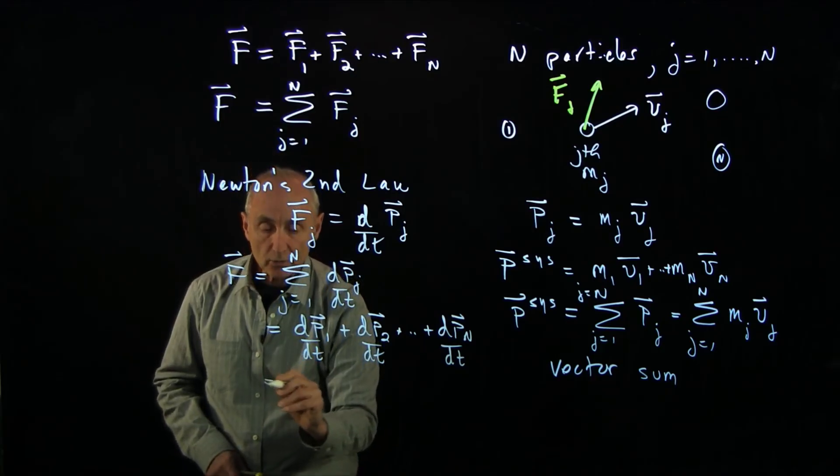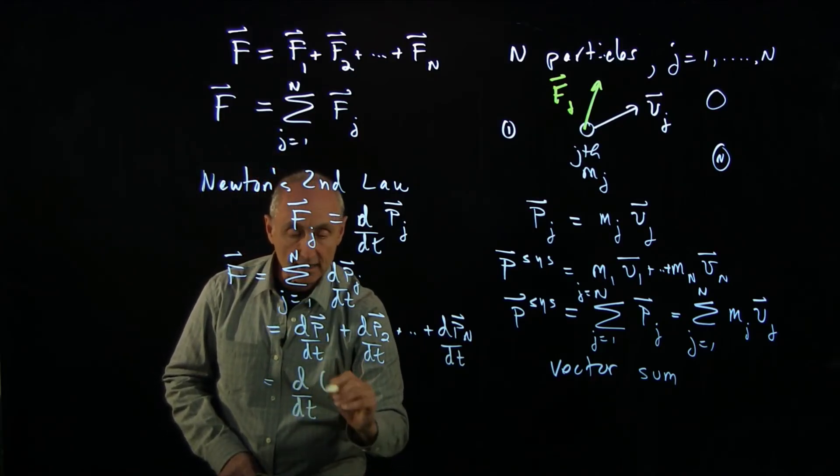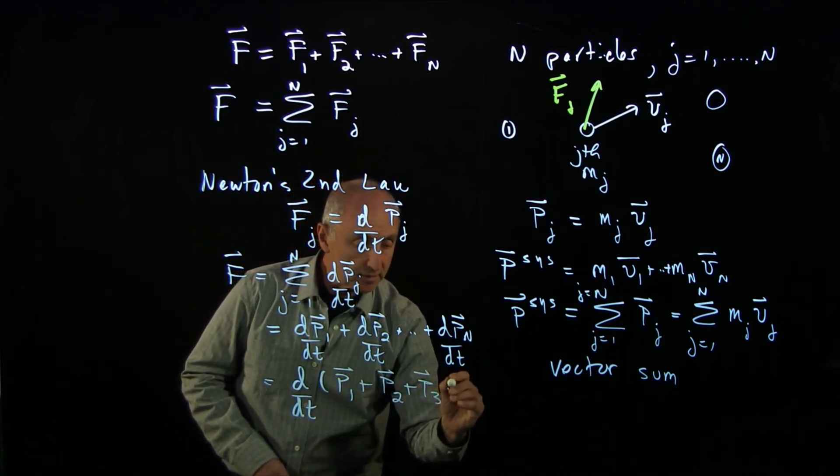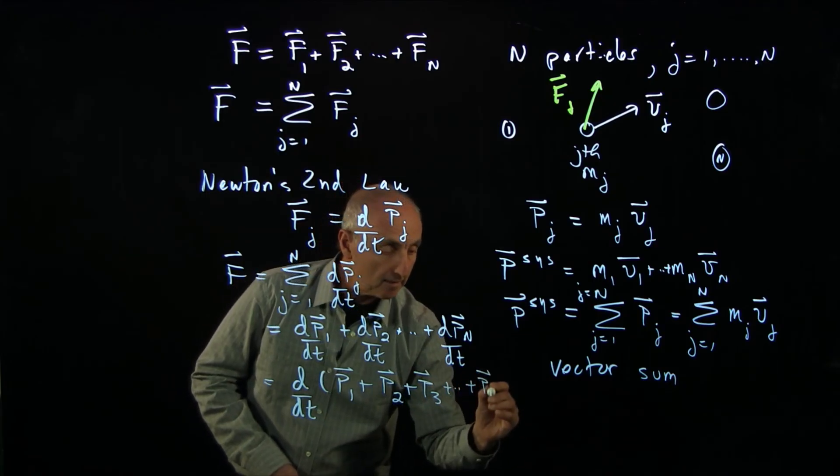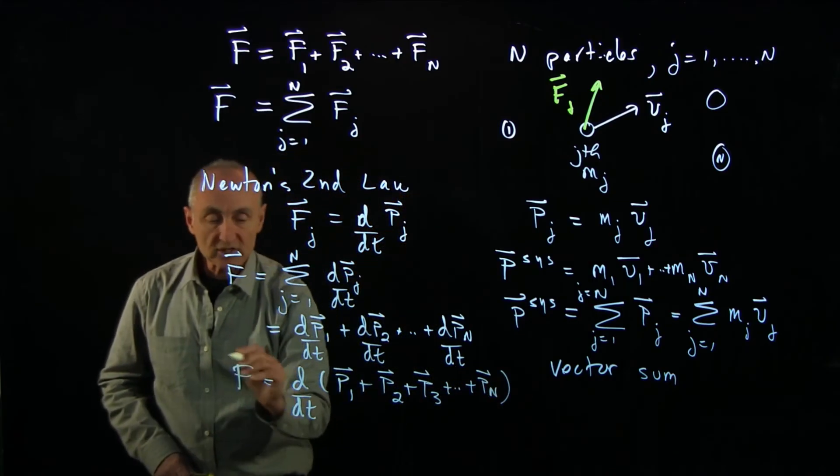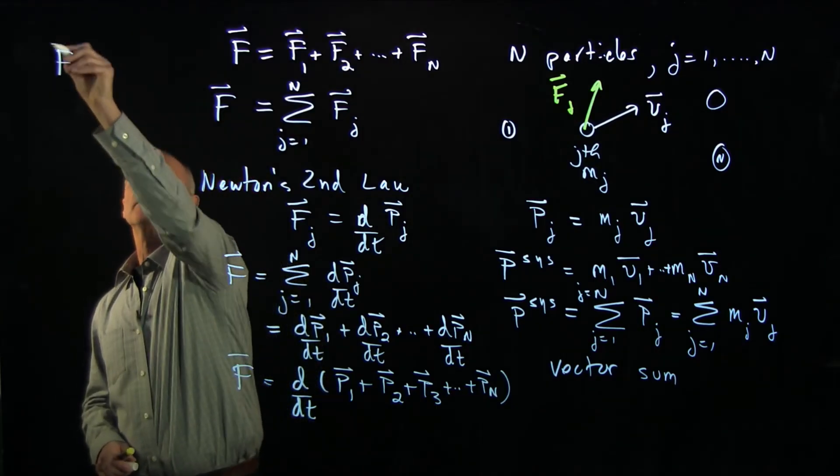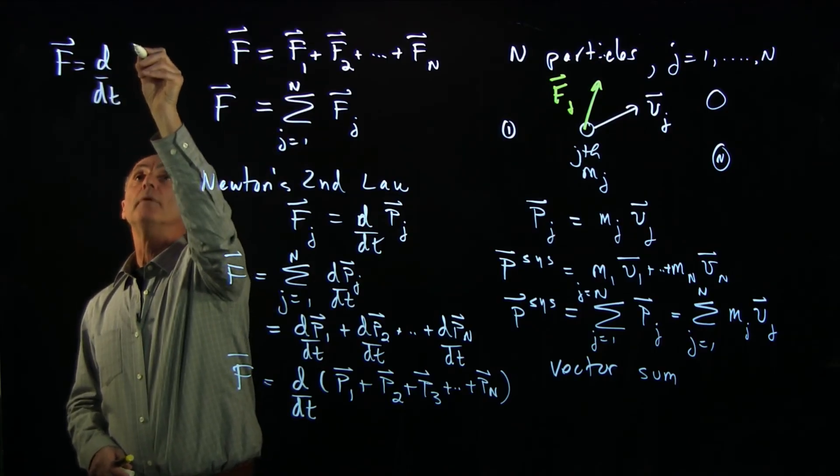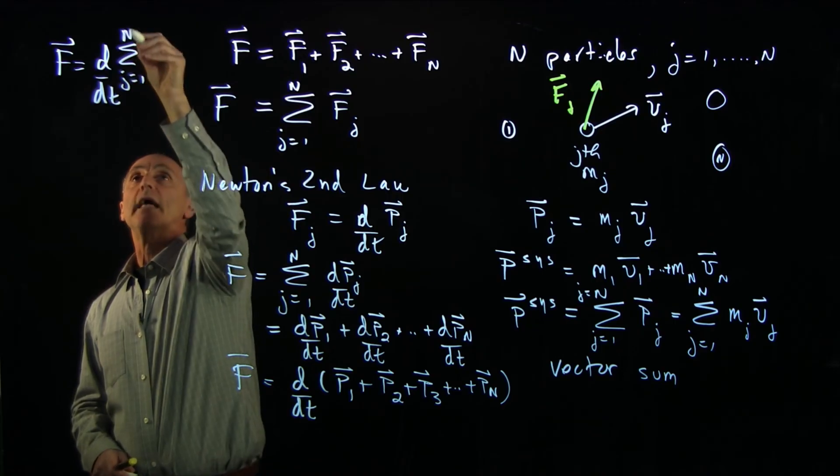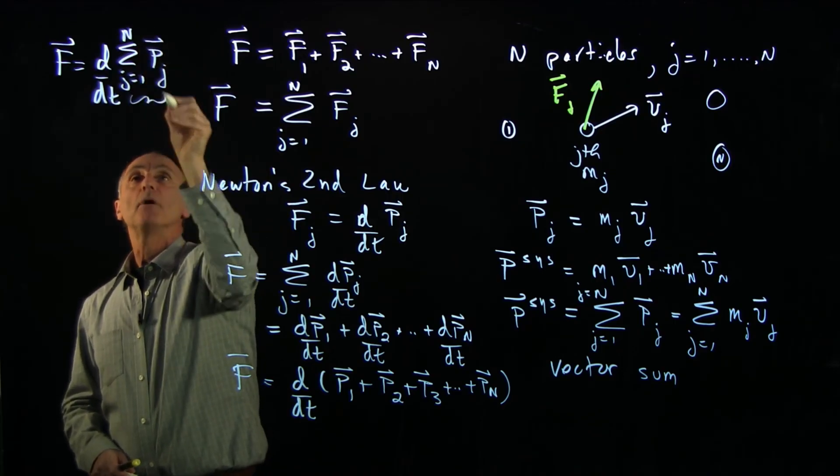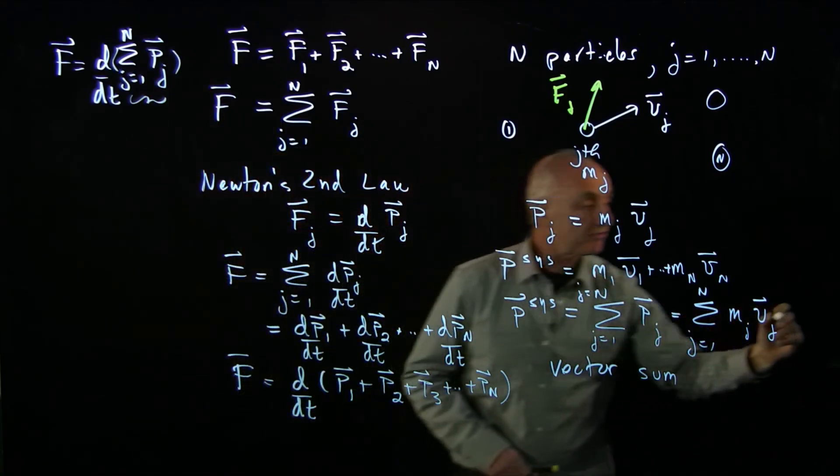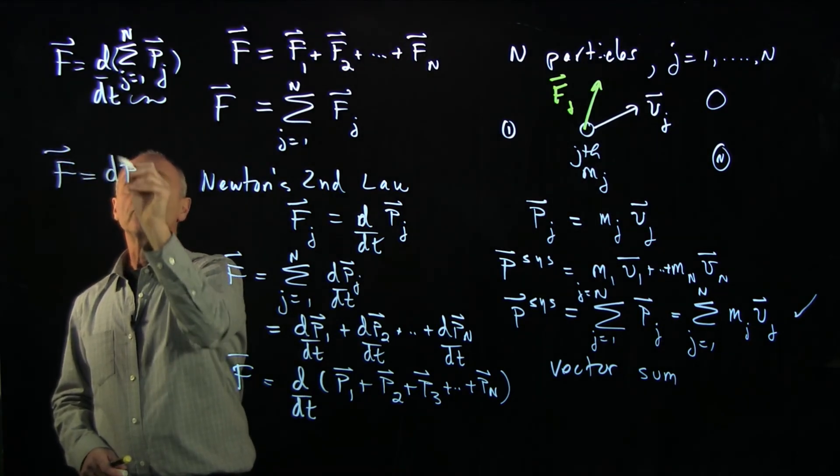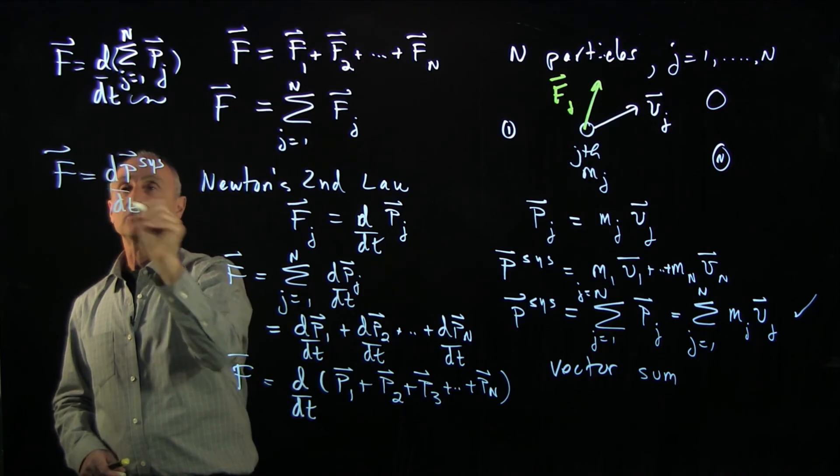That's what we mean by the sum. We can rewrite this as d by dt of p1 plus p2 plus p3 plus dot, dot, dot, plus pn. And what we see is that the total force is the derivative of the sum j goes from 1 to N of the momentum. But recall, this sum we've defined as the momentum of the system. So our conclusion is the total force causes the momentum of the system to change.